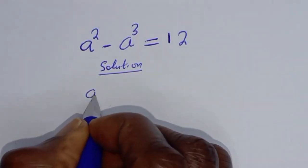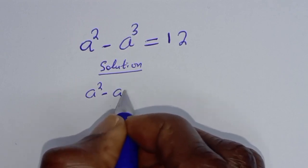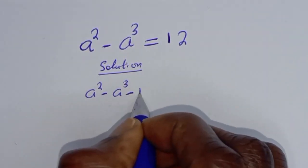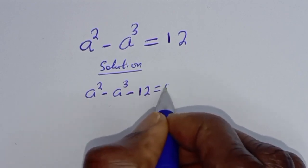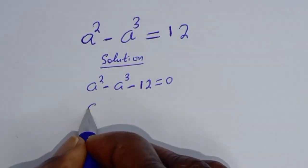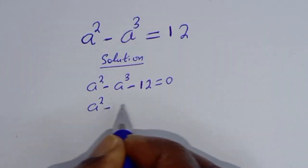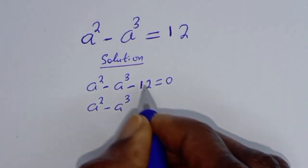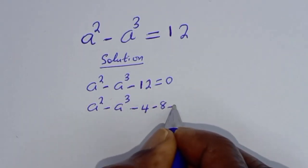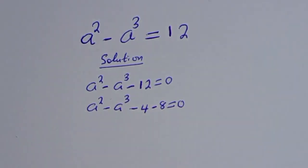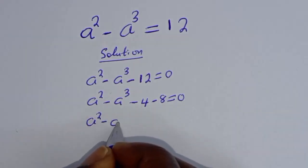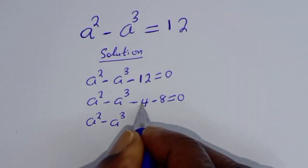Taking terms to the other side: a squared minus a raised to power 3 minus 12 is equal to 0. We split minus 12 as minus 4 minus 8, giving a squared minus a raised to power 3 minus 4 minus 8 equals 0.